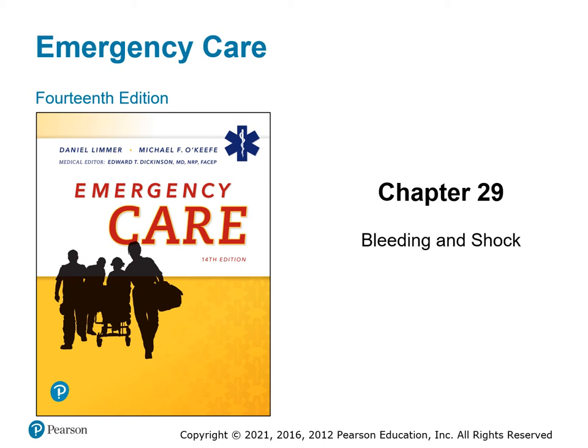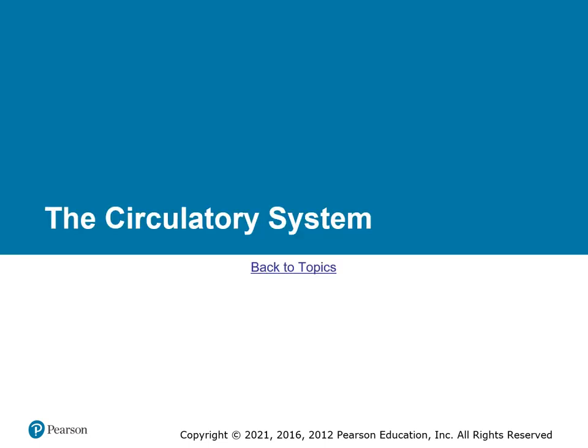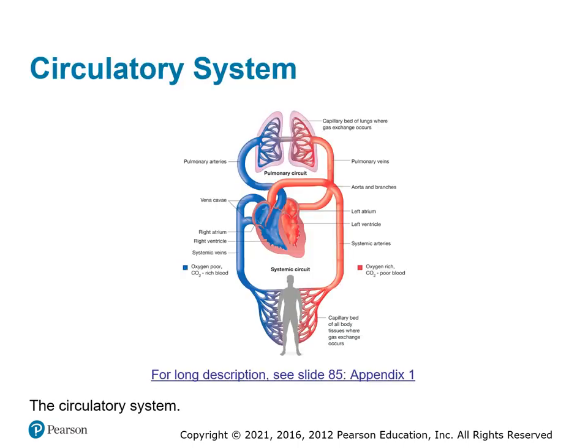Chapter 29, Bleeding and Shock. Let's start with a review of the circulatory system. We have the pump, the pipes, and the fluids. The pump is the heart — you should know all the cardiac anatomy, the ventricles and atria and how they work. You need to know your blood vessels, aortic branches, how blood flows to the end organs, and how it returns through the venous system and the pulmonary circuit through the lungs and capillaries and back into the heart.